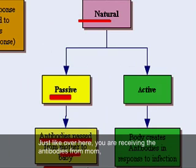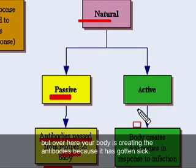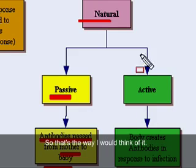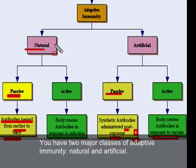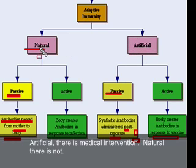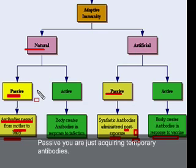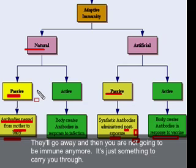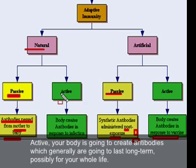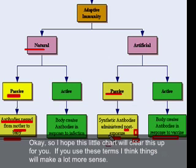To summarize: you have two major classes of adaptive immunity — natural and artificial. Artificial requires medical intervention; natural does not. Under each category you have passive or active. Passive means you're acquiring temporary antibodies that will go away, so you won't remain immune — it's just something to carry you through. Active means your body is creating antibodies, which generally last long term, possibly for your whole life. I hope this chart clears things up, and if you use these terms, things will make a lot more sense.